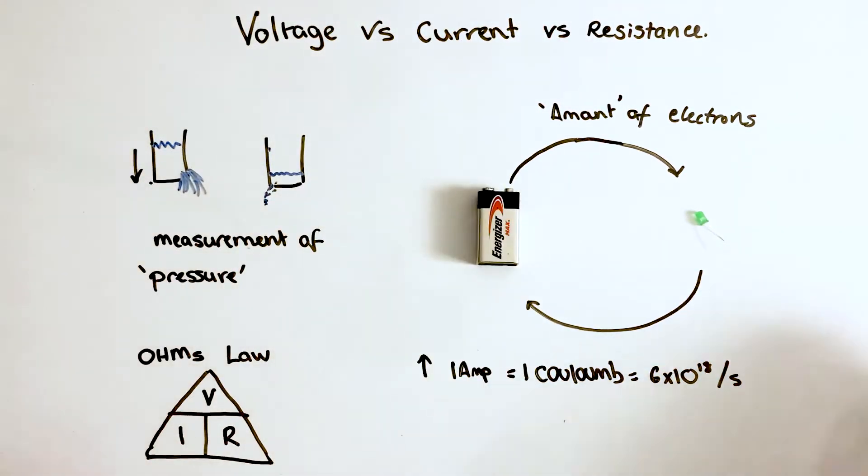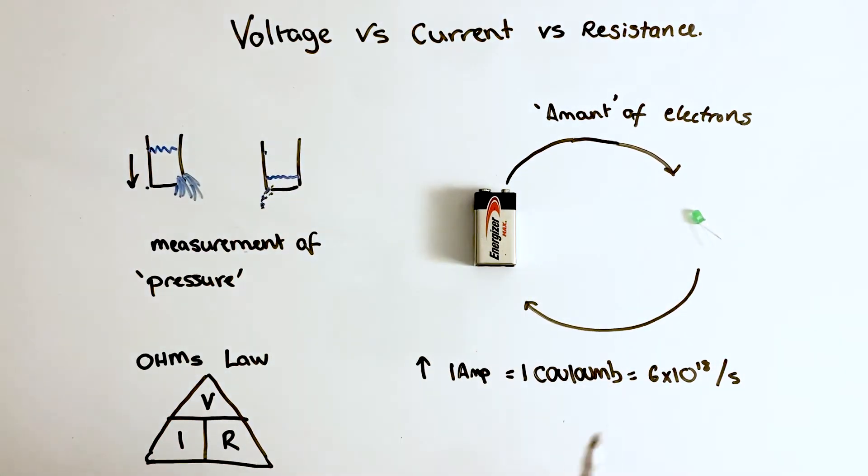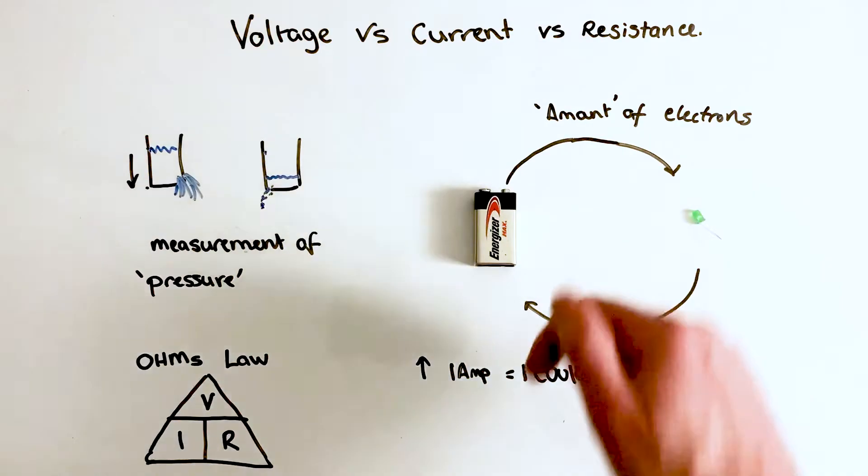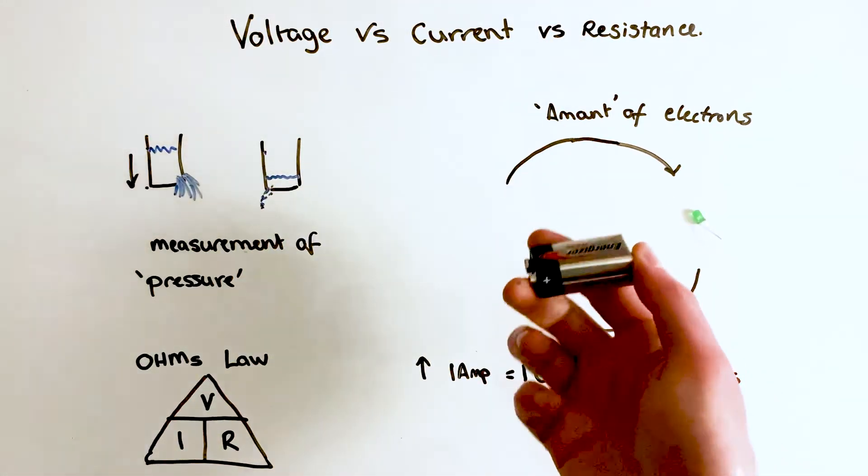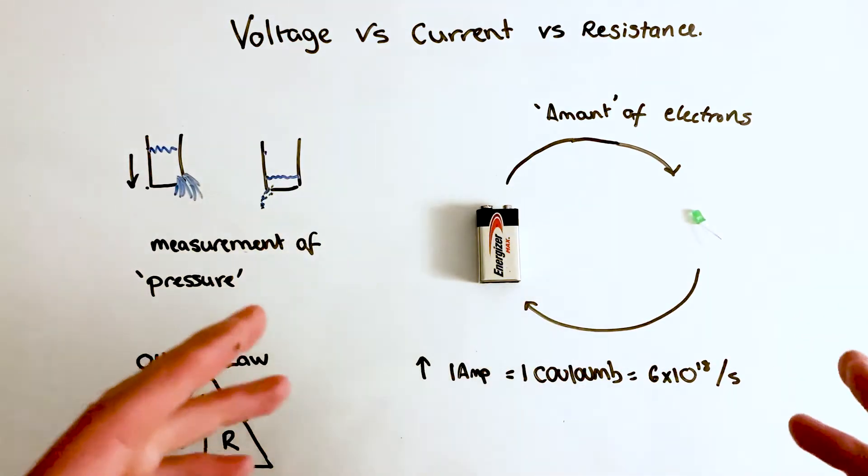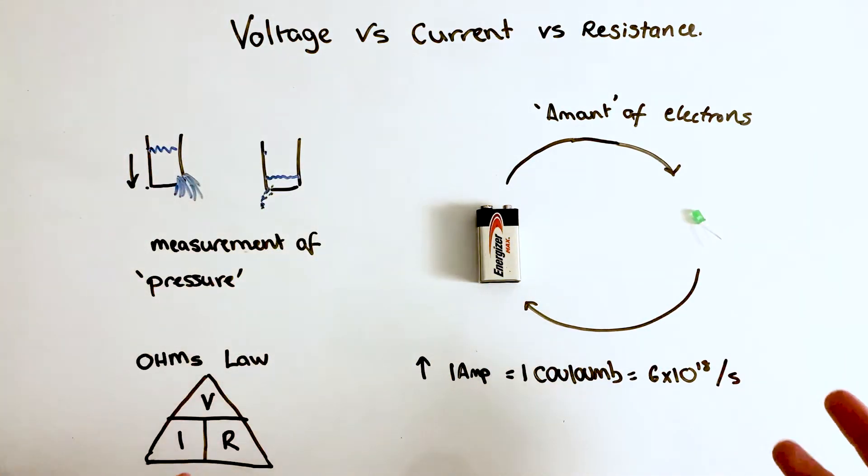Next one is to talk about current. So when I think of current, I like to think of it as the amount of electrons going around a circuit at any given time. Just because you have a large amount of voltage doesn't necessarily mean you've got a large amount of electrons flowing around in that circuit. And that's what a measurement of current is.